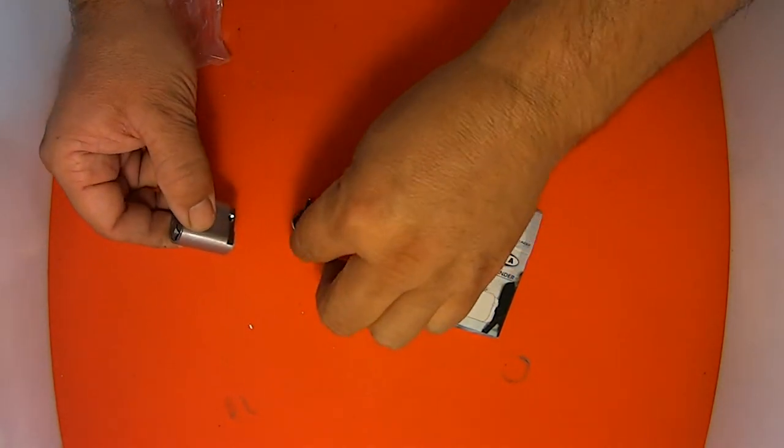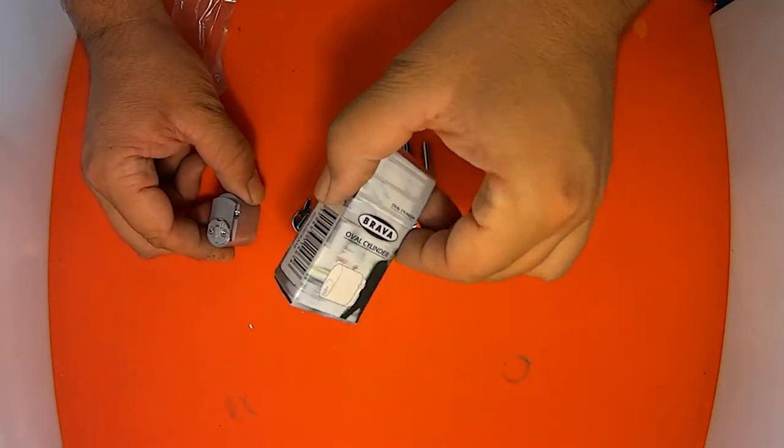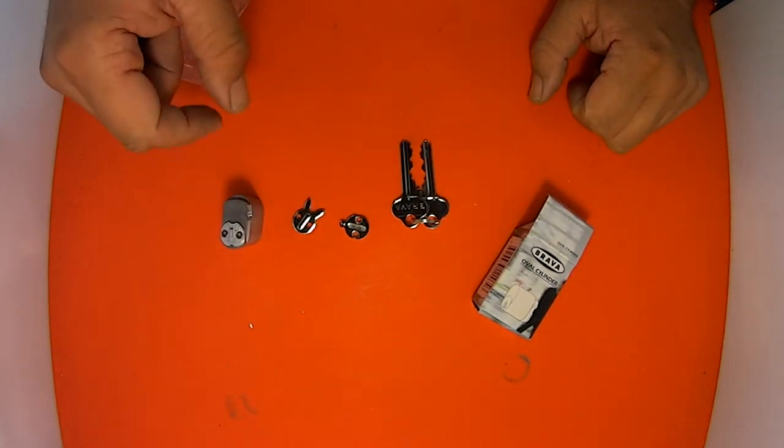This cylinder comes with cams on the back. This particular one out of the Brava box has three cams to choose from: one, two, three.